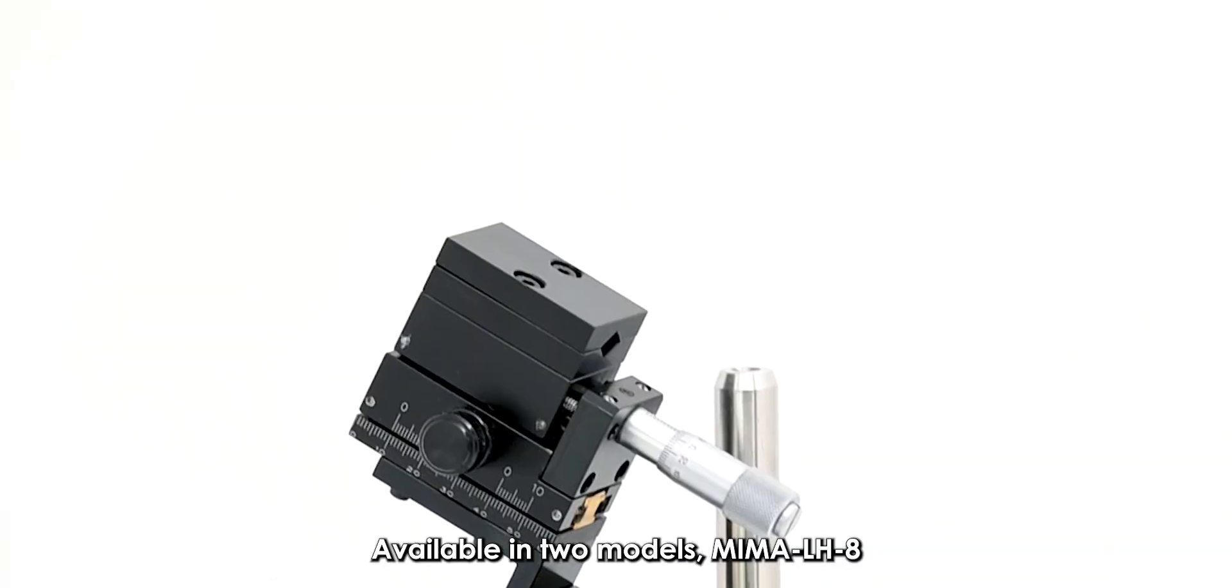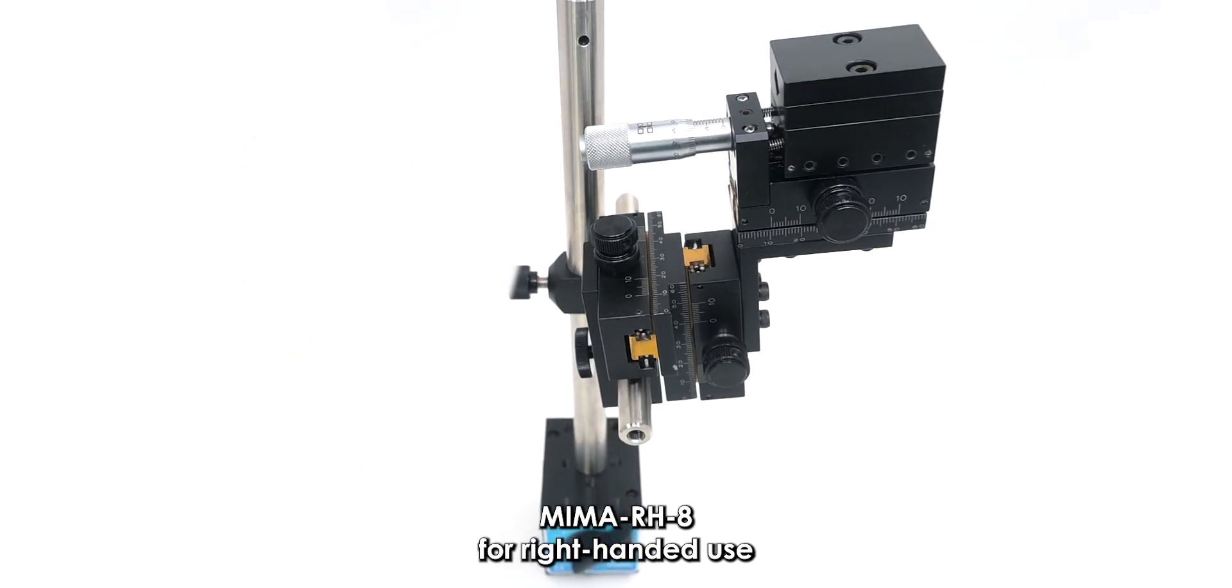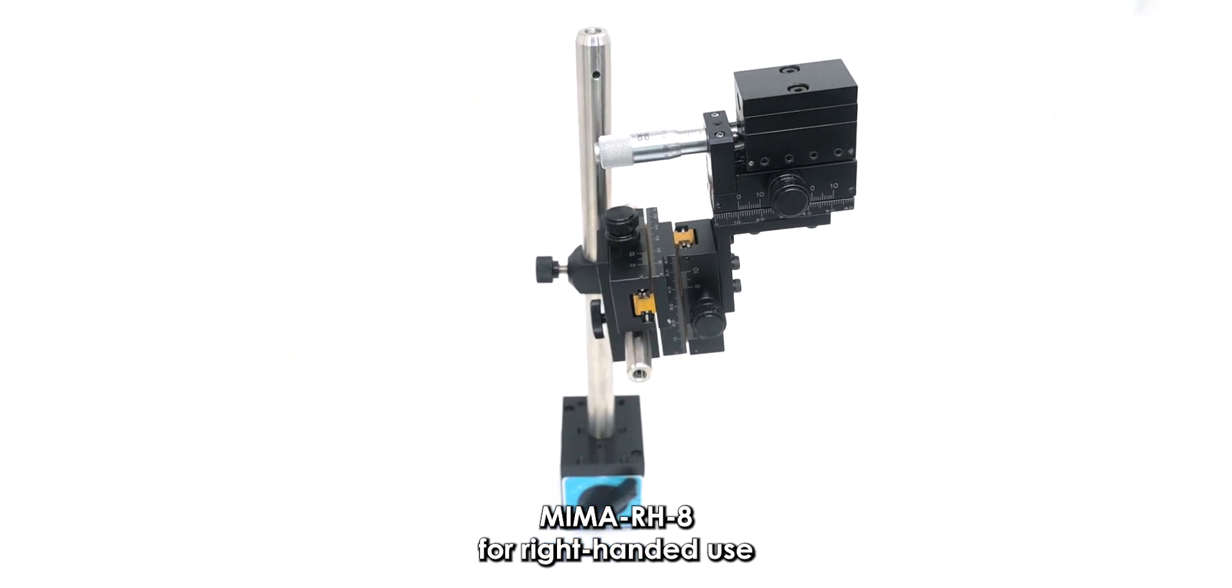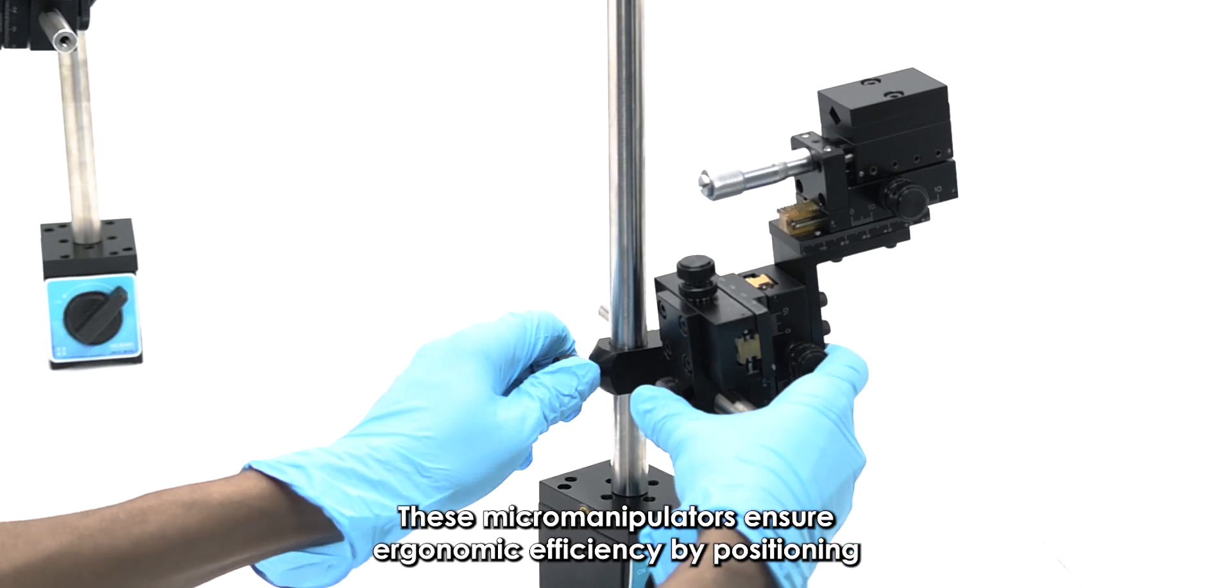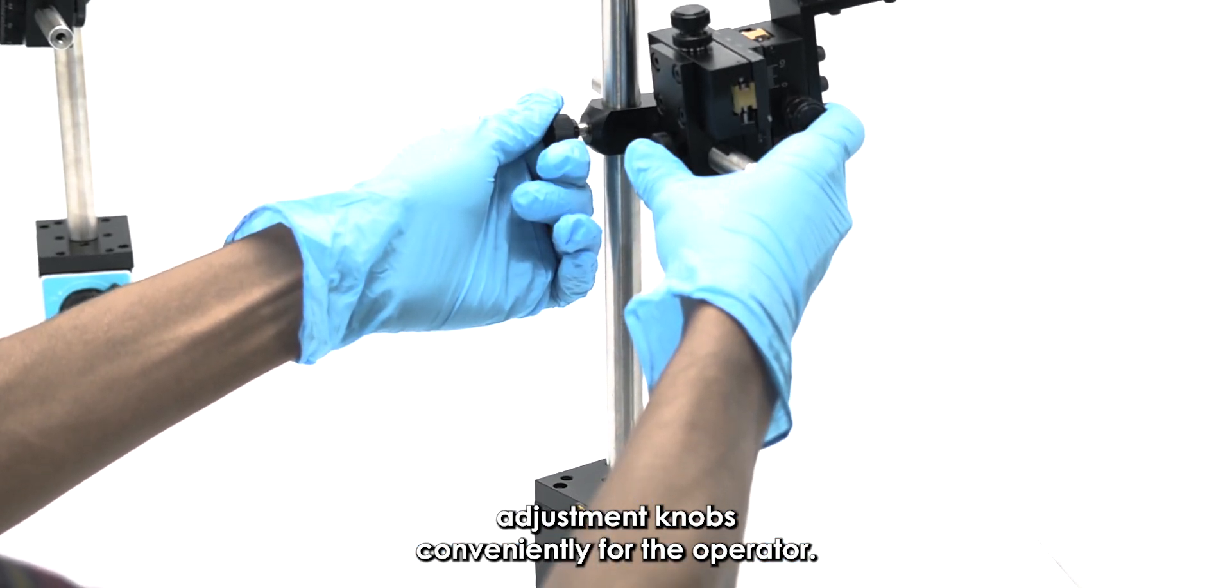Available in two models, MIMA-LH-Nate for left-handed use and MIMA-RH-Nate for right-hand use, these micro manipulators ensure ergonomic efficiency by positioning adjustment knobs conveniently for the operator.